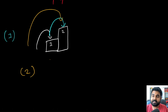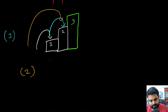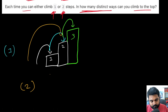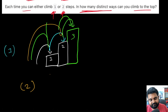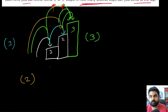If we have three steps, how many distinct ways can we reach the top? Path one: take one step at a time. Path two: take two steps then one step. Path three: take one step then two steps. So overall we have three distinct ways to reach the top.